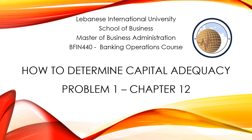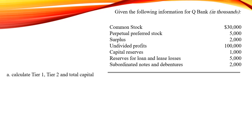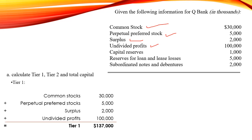Hello everyone. In this video we are going to show you how to determine capital adequacy. This is problem one of the worksheet, Chapter 12. Given the following information for QBank, calculate Tier 1, Tier 2, and total capital. Tier 1 is equal to the summation of common stocks, perpetual preferred stocks, surplus, and undivided profits. As a result, Tier 1 capital will be equal to $137,000.